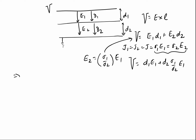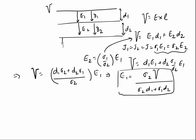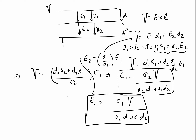From this, we find E₁ = σ₂V / (σ₂d₁ + σ₁d₂). Similarly, from σ₁E₁ = σ₂E₂, we get E₂ = σ₁V / (σ₂d₁ + σ₁d₂). In this way, we have solved the second part and found E₁ and E₂. From these, D₁ = ε₁E₁ and D₂ = ε₂E₂.